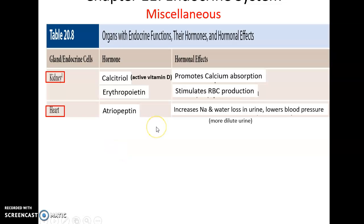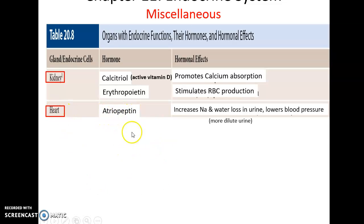A few other structures with endocrine functions: the kidneys store the active form of vitamin D, called calcitriol, which is released to increase calcium absorption by the intestines. The kidneys also produce erythropoietin, which stimulates red blood cell production in the red bone marrow. The heart releases atriopeptin, which acts on the kidneys to increase sodium and water loss in urine, making urine more dilute and thereby lowering blood pressure.